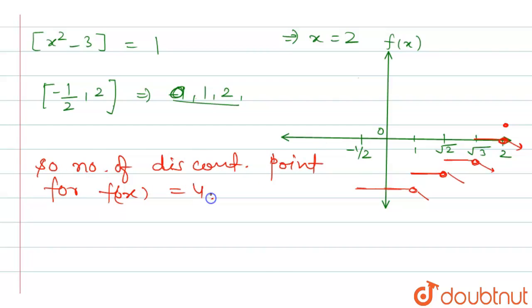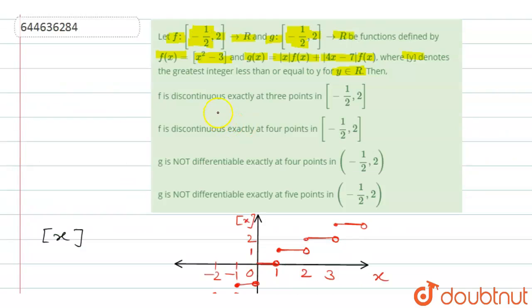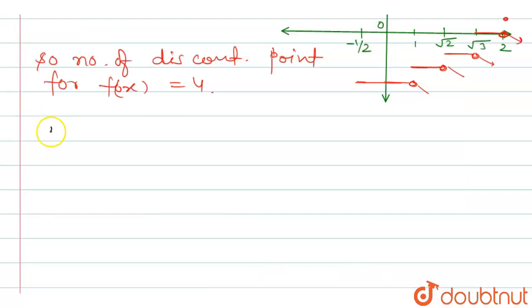So the number of discontinuous points for f(x) is 4. Comparing with the options, f is discontinuous exactly at 4 points in the interval [-1/2, 2], which is the correct option. Now let's move on to g(x).